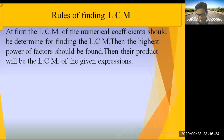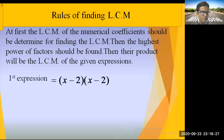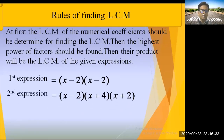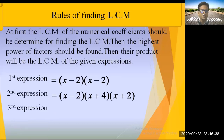Then the highest power of each factor should be found, and their product will be the LCM of the given expressions. For example: first expression is (x-2)², second is (x-2)(x+4)(x+2), third is (x-2)(x+4). Let's find the LCM.